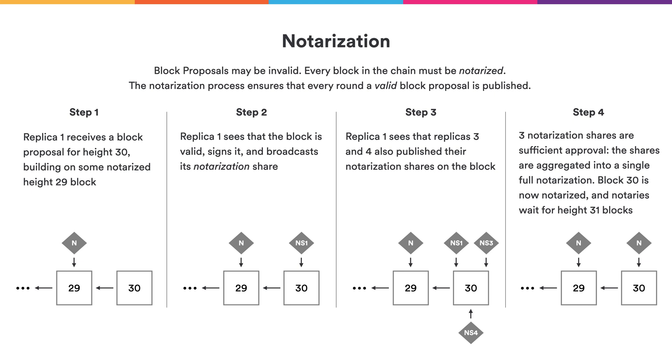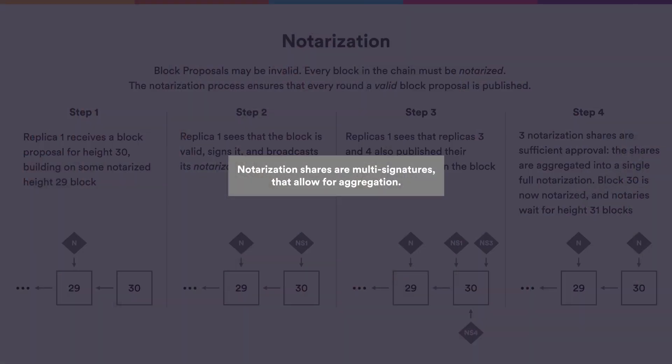The notaries then move on to the next round and start looking for height 31 blocks. Note that 3 out of 4 is the highest amount of approval we can hope for, because the protocol should make progress even if one node is misbehaving or offline. For these notarization shares, we use special signatures called multi-signatures. Multi-signatures have the nice property that many signatures on the same message can be compressed into a single constant-size signature, meaning that even with a very large subnet, the notarization will still be a small object.